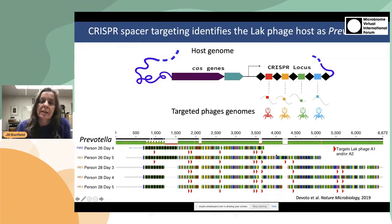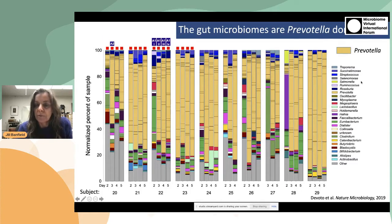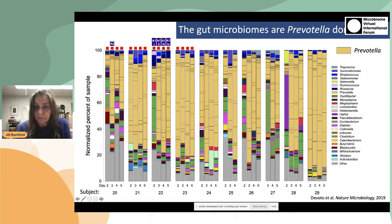So from this we deduce that LAC phages replicate in Prevotella. When we look at the gut microbiomes of these individuals, shown as stacked bar charts, we can represent the overall microbiome composition. Focusing on the gold color, these are the genotypes assigned to the genus Prevotella — each segment within a bar represents a distinct species of Prevotella. Take home point: these human microbiomes are dominated by Prevotella, as were the samples from which the LAC phage was detected or genomes reconstructed.